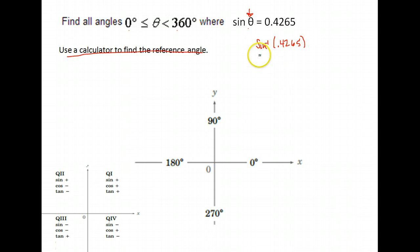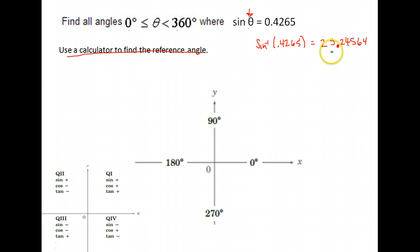It needs to be in degrees. If you do inverse sine of 0.4265, you should get 25.2456... — that's what you should get if you're using the correct buttons and you're in the correct mode. If you have trouble finding the correct mode on your calculator or which buttons to use, contact your teacher to get the help. Because once you have that figured out, it's no sweat.